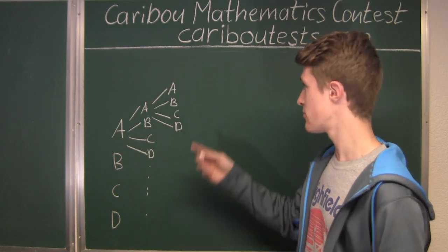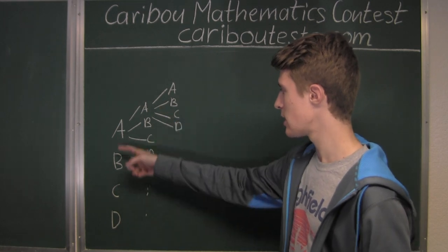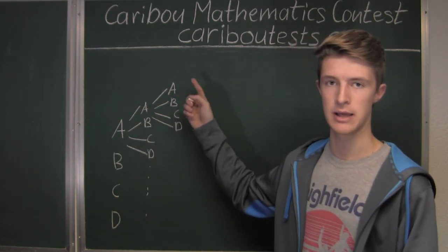And again, finally for the fourth letter, we again have four options: A, B, C, and D for each combination of the first three letters.